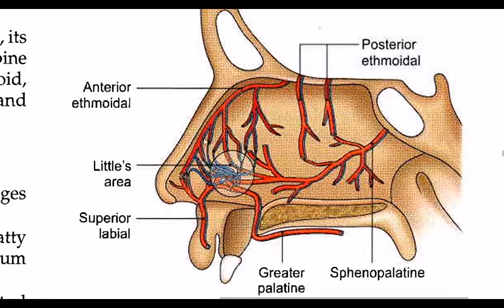The four quadrants are: anterior superior, anterior inferior, posterior superior, and posterior inferior. The anterior parts have two arteries supplying them.